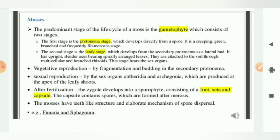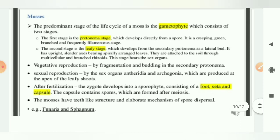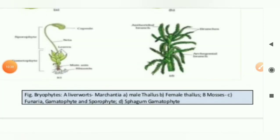And we know that the capsule contains spores which are formed after meiosis. What are these meiosis—the mosses have teeth-like structure and elaborate mechanism of spore dispersal. Example is Funaria and Sphagnum. As you can see in this picture, these are mosses. First one is your Funaria and second one is your Sphagnum.